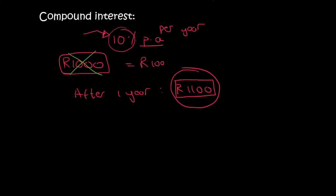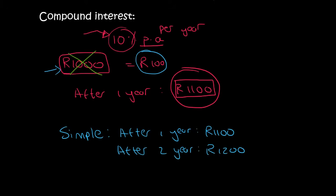If we're using simple interest which is what we did in the previous lesson, the bank will keep giving you 100 rand every month even though you don't have a thousand rand anymore. So for simple interest after one year you would have a thousand one hundred, but then after the second year they'll only give you another 100 rand and so you would only have a thousand two hundred.